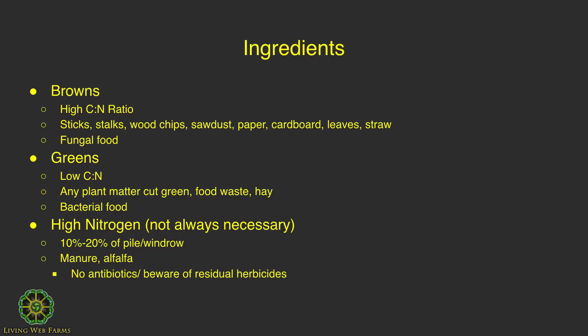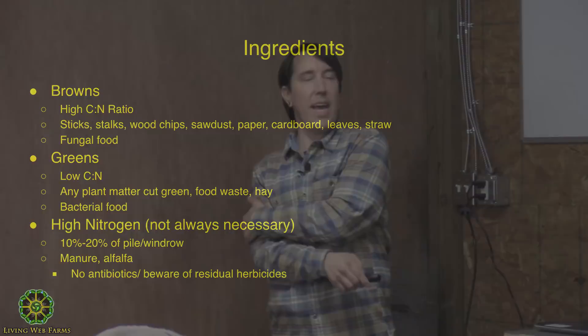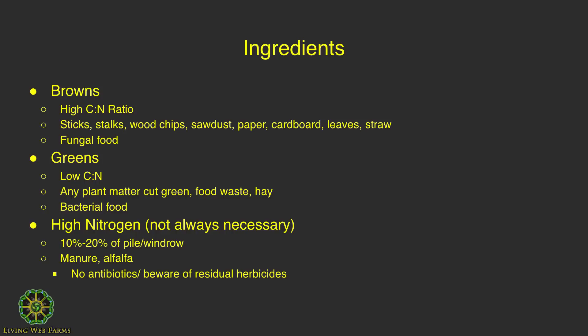Then we've got greens, which have a low carbon-to-nitrogen ratio. This is any plant matter that was cut green — when you pull weeds out of your garden, those are green material. Food waste and coffee grounds are green material. Hay and straw are actually the same exact plant: if you cut hay when it's green, it still has all the carbohydrates, proteins, and sugars, so it's a green material. But once you let it die and those things have gone into the roots, it's considered a brown material. Browns are fungal food and greens are more bacterial food.